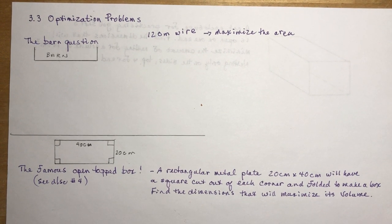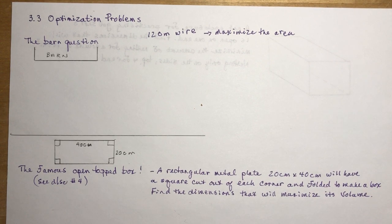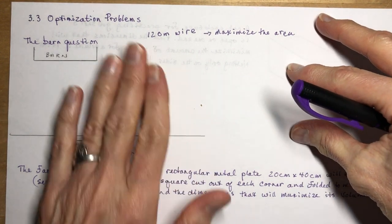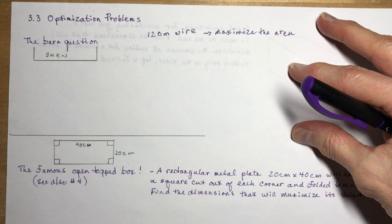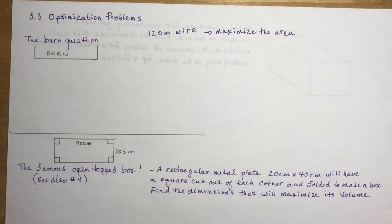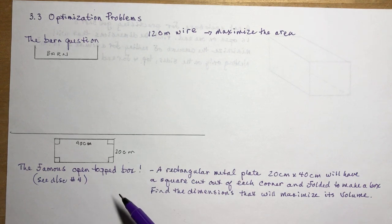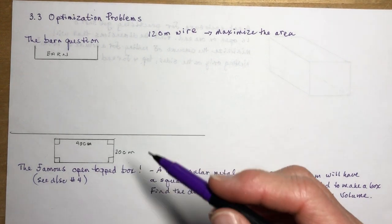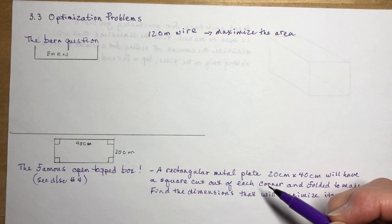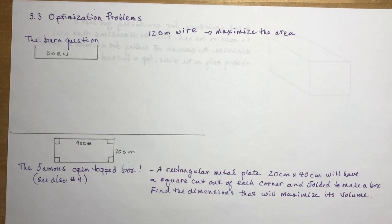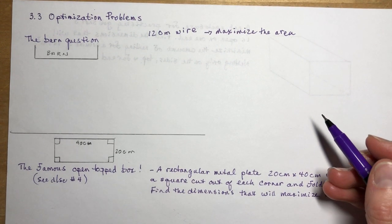Section 3.3 optimization problems. I'm going to do three shorter questions, and then in the next lesson I'll look into some more difficult problems. The first two are very popular questions you see often — I'm sure you've done them in grade 10 or grade 11 — the famous open-top box. We'll go through those and show how you can use calculus to solve them, which is much easier than the way you used to do it in grade 10.